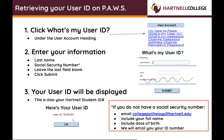If you do not have a social security number, email collegepathways@hartnell.edu. Include your full name and date of birth and we will email you your Hartnell student ID number.